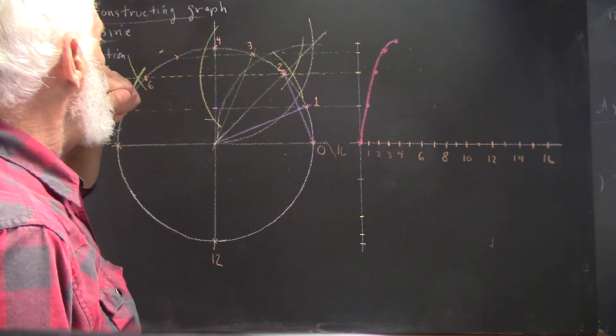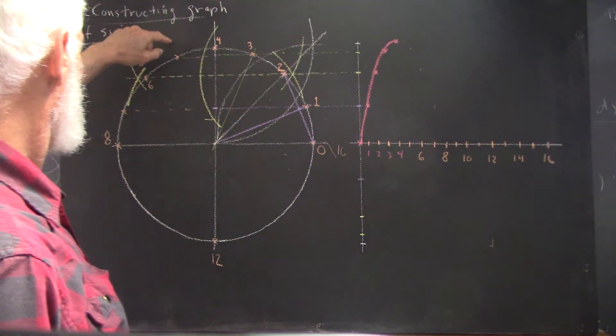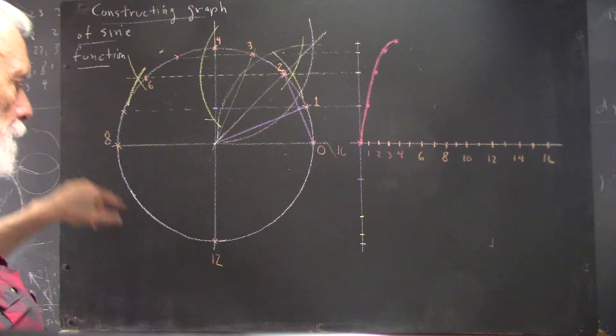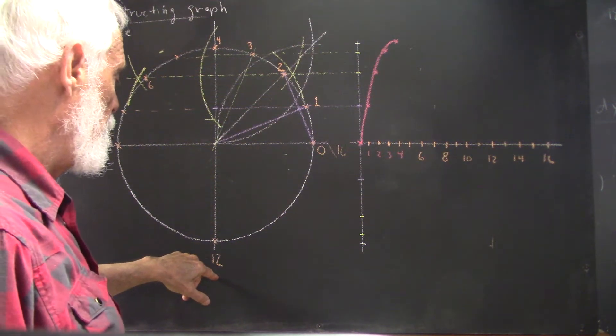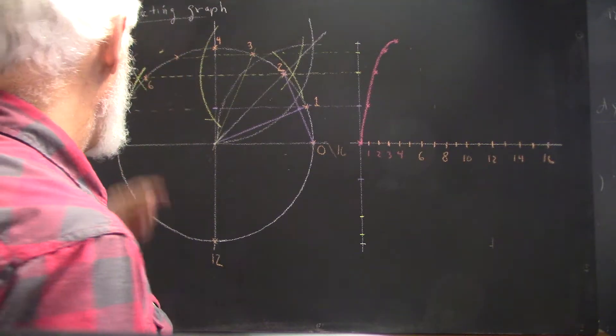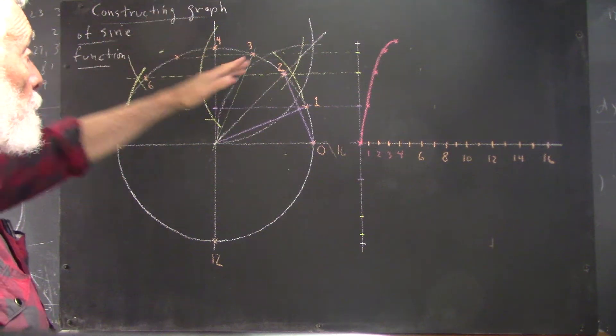Now it should be clear that we could keep numbering angles all the way around the circle. And if the angles within the first quadrant go from 1 through 4, then we're going to go from 5 through 8 in the second, 9 through 12 in the third, and 13 through 16 in the fourth quadrant.